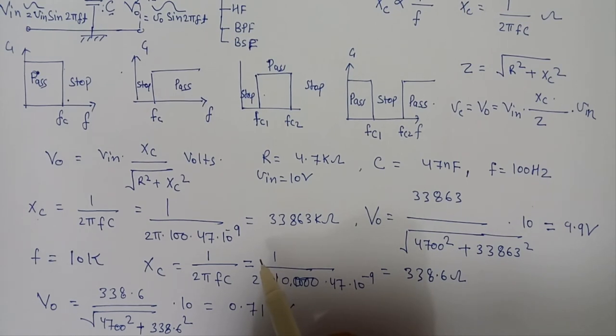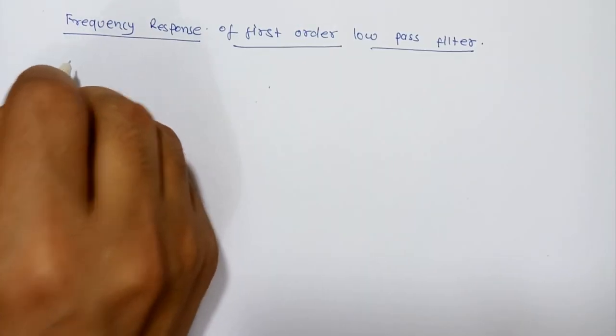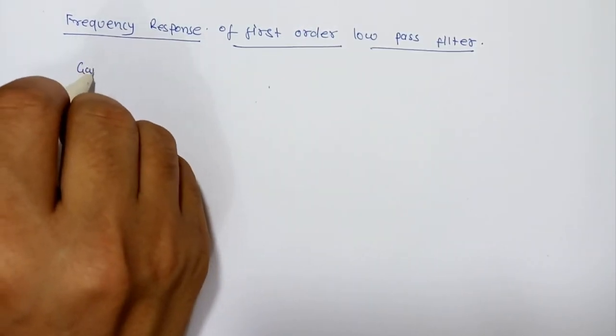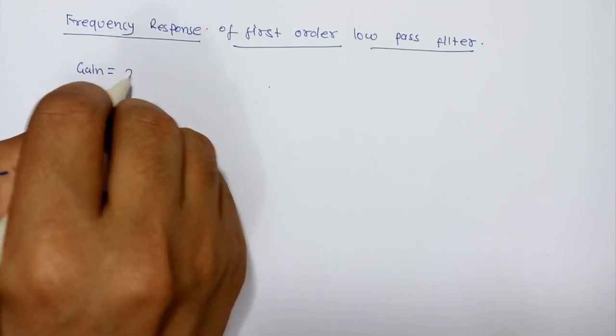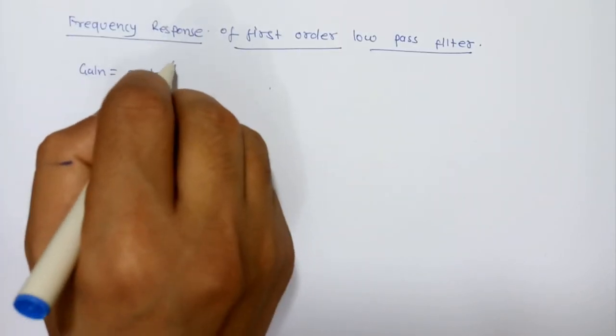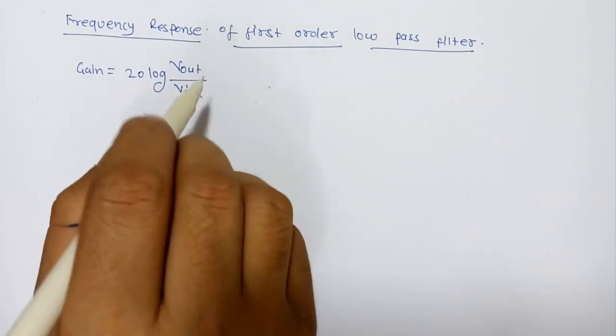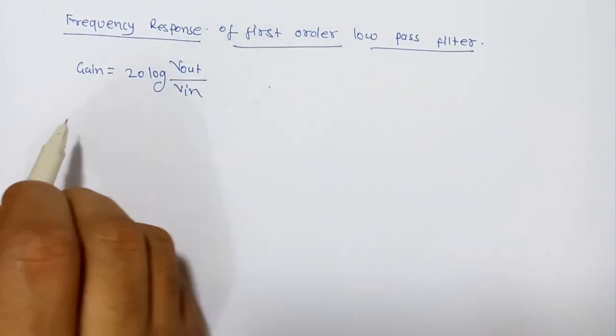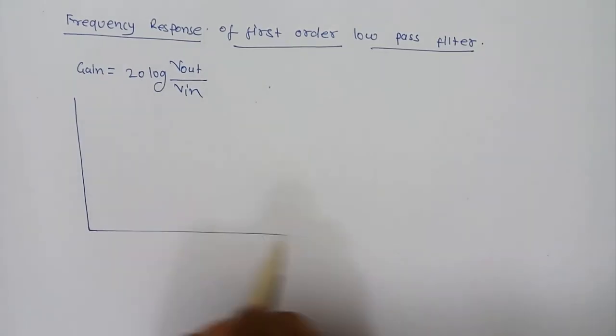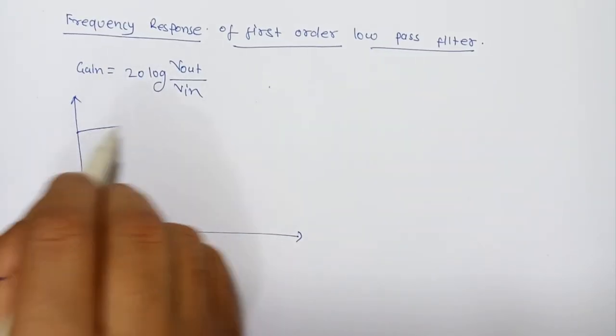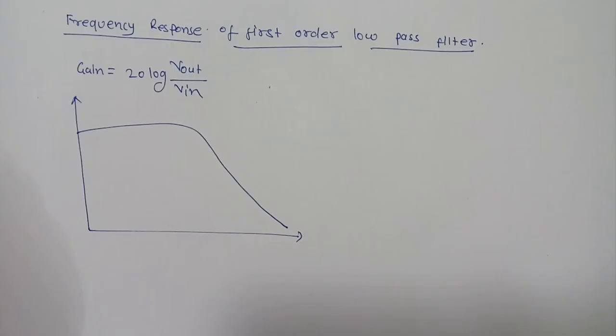If we calculate the gain in dB, the gain will be 20 log(Vout/Vin). And if we plot the Bode plot of the low pass filter, it will become something like this.